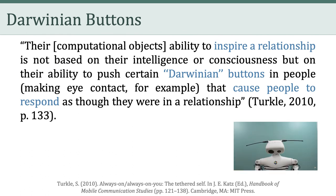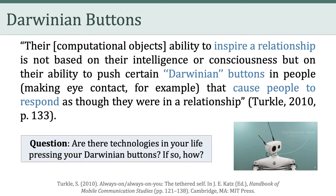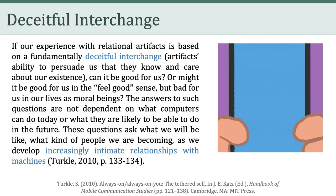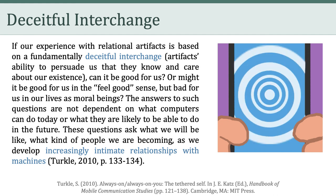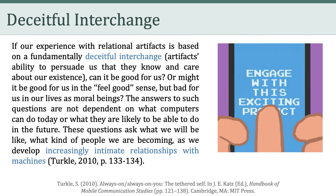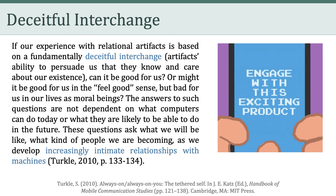Turkle also talks about Darwinian buttons, arguing that computational objects — computers and communication devices — have an ability to push certain Darwinian buttons in people that cause people to respond as if they were in a relationship. I'd ask you to reflect: are there technologies in your life pressing your Darwinian buttons? Turkle also talks about 'deceitful interchange,' which she defines as an artifact's ability to persuade us that they know and care about our existence, and she asks whether that is good for us, or might it be good in the feel-good sense but bad for us as moral beings. She writes: 'The answers to such questions are not dependent on what computers can do today, or what they are likely to be able to do in the future. These questions ask what we will be like, what kind of people we are becoming, as we develop increasingly intimate relationships with machines.'